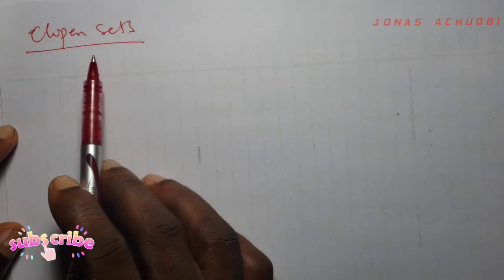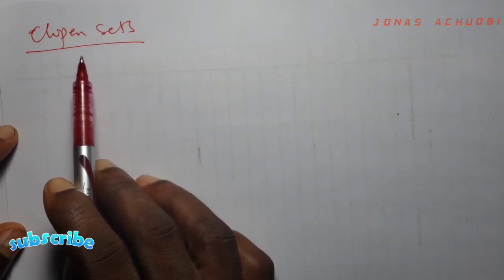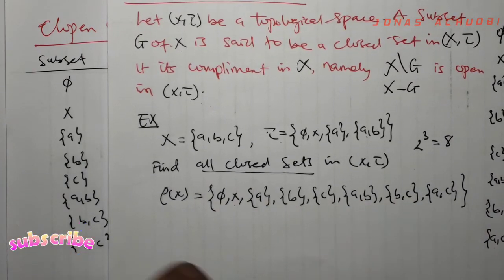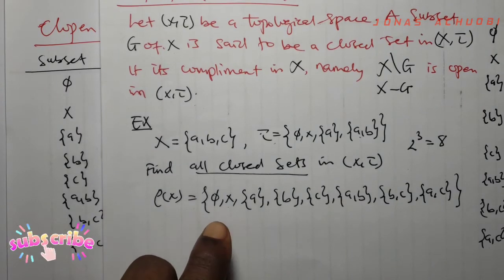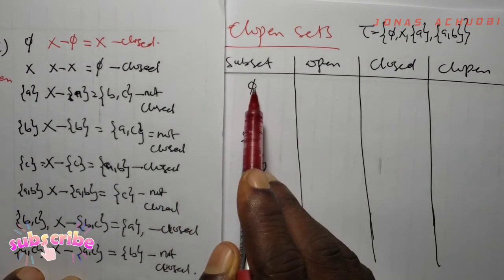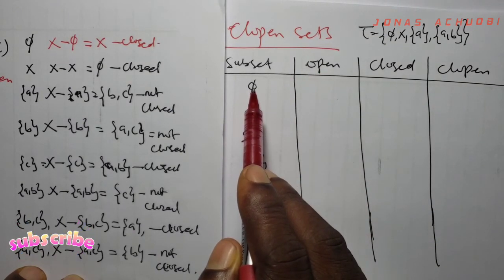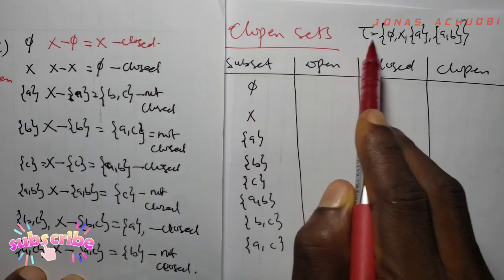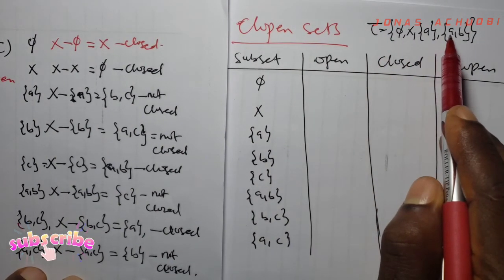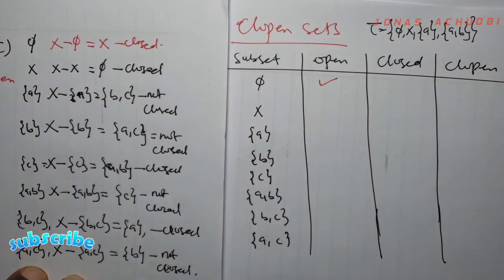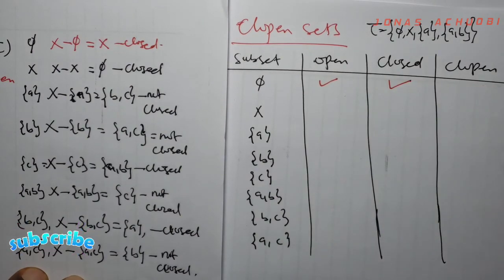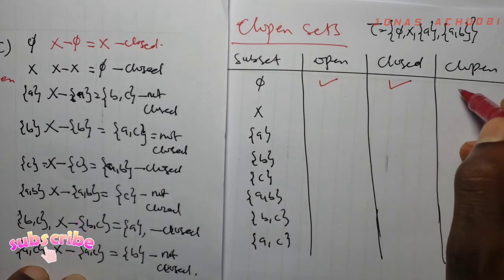Clopen sets. If a subset of the non-empty set X is both closed and open, then the subset is said to be clopen. We want to check which of the subsets of X is both open and closed. The first subset is phi, the empty set. Is phi open? We check if phi is in tau — yes, phi is in tau, so phi is open. Is phi closed? Phi was said to be closed. Since phi is both closed and open, phi is a clopen set.